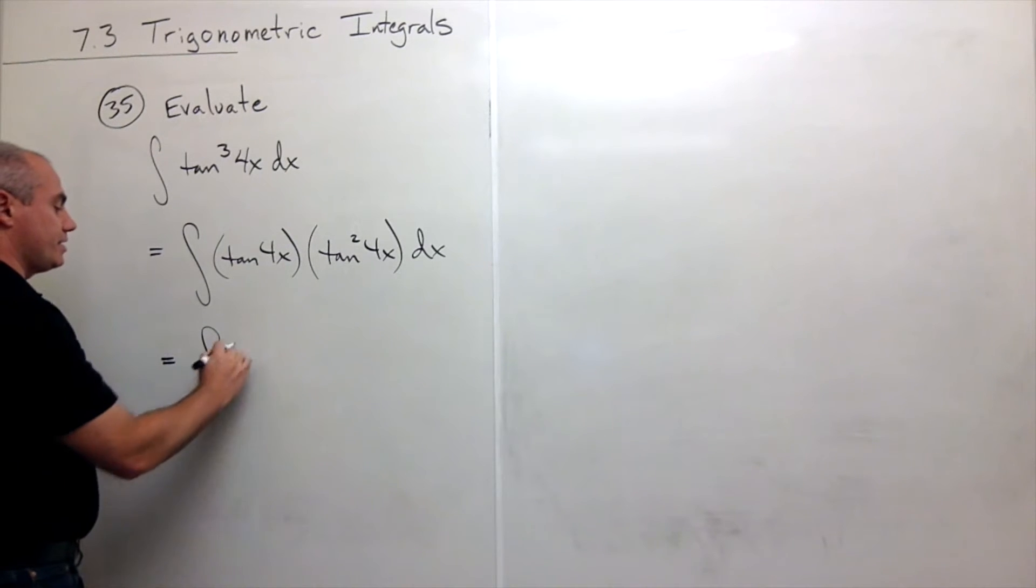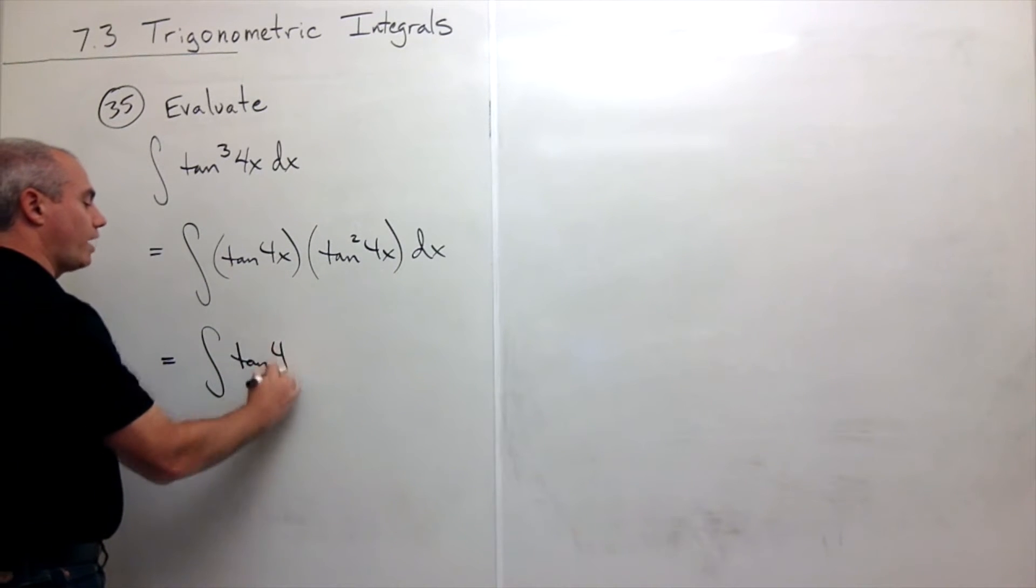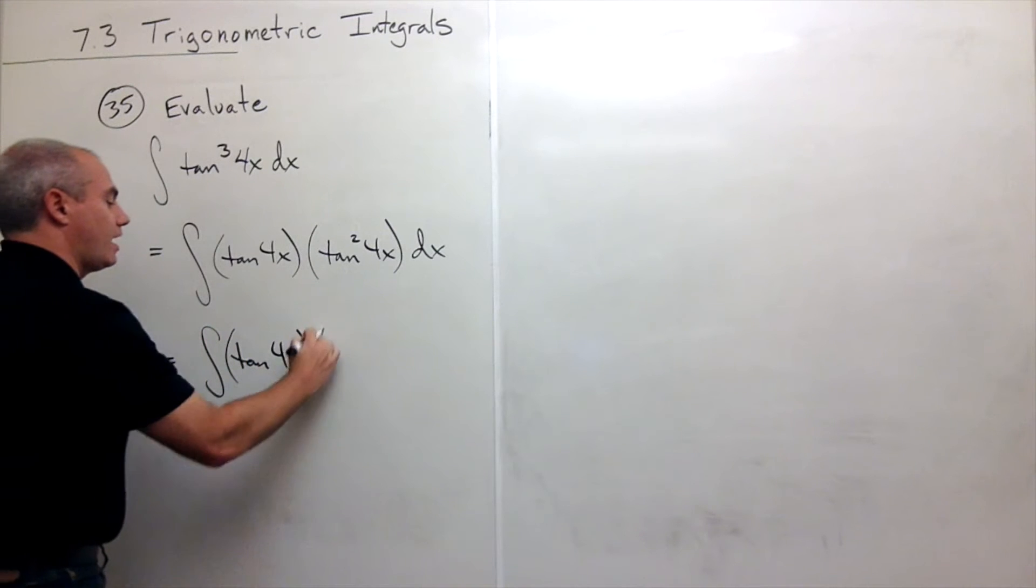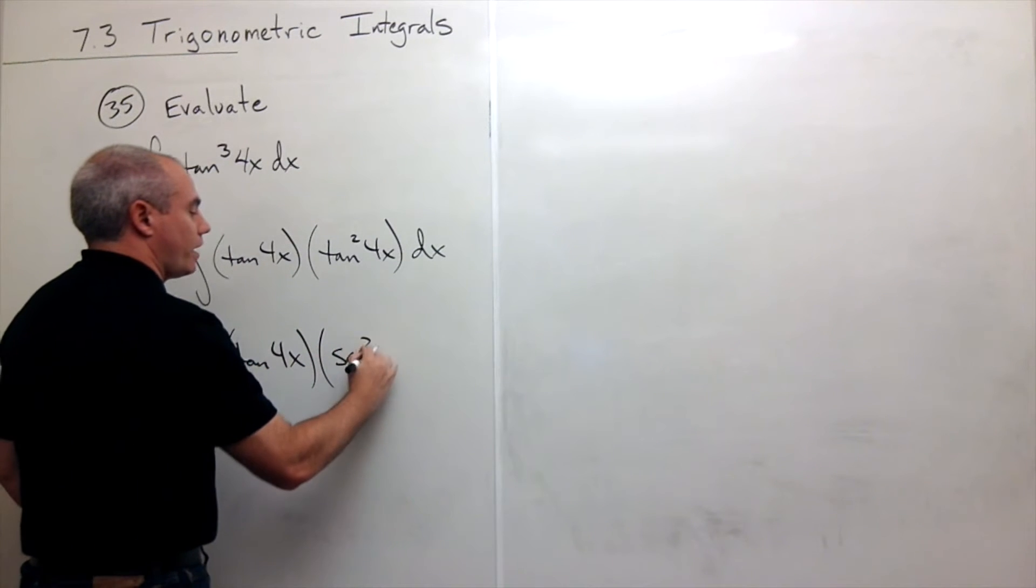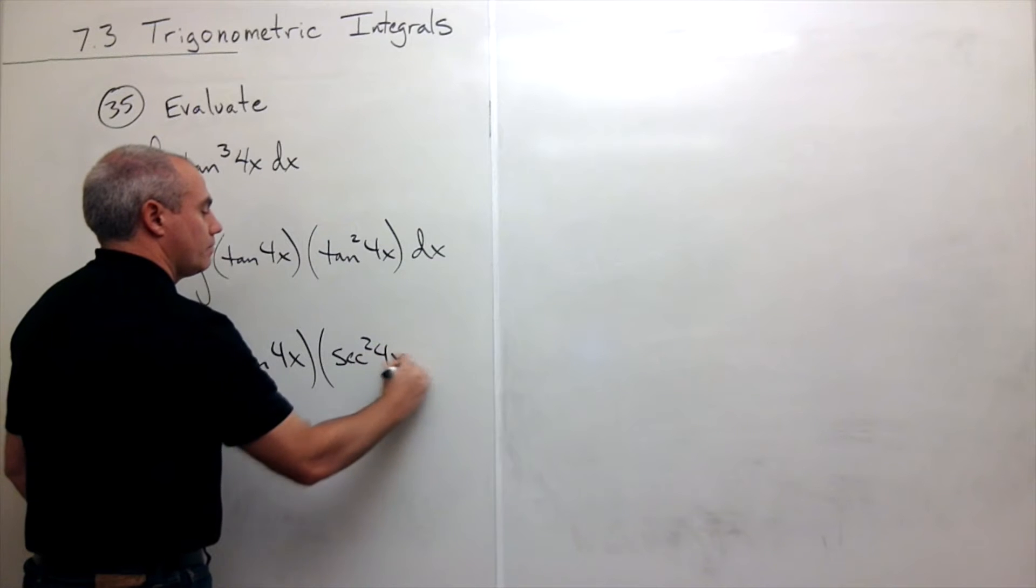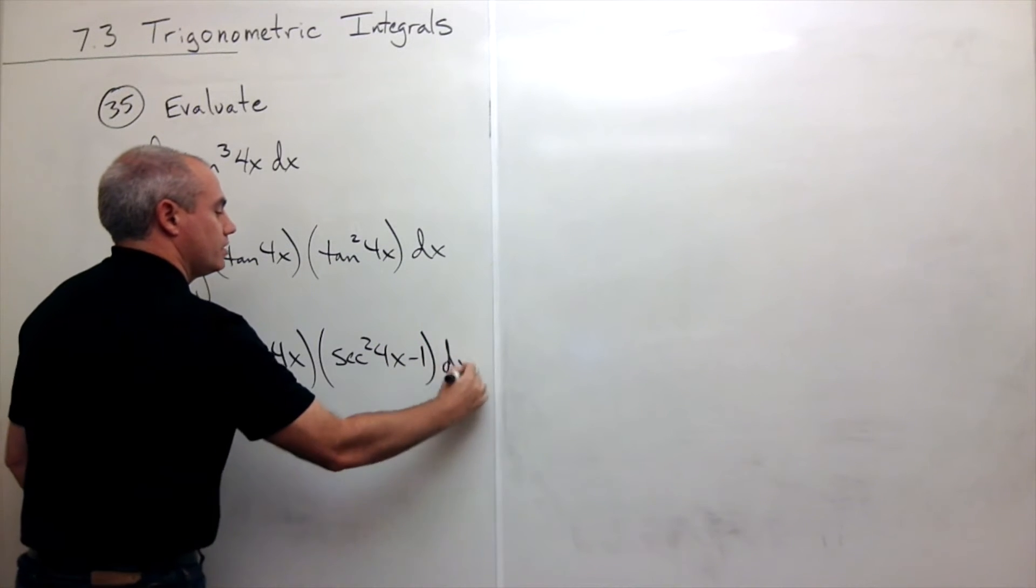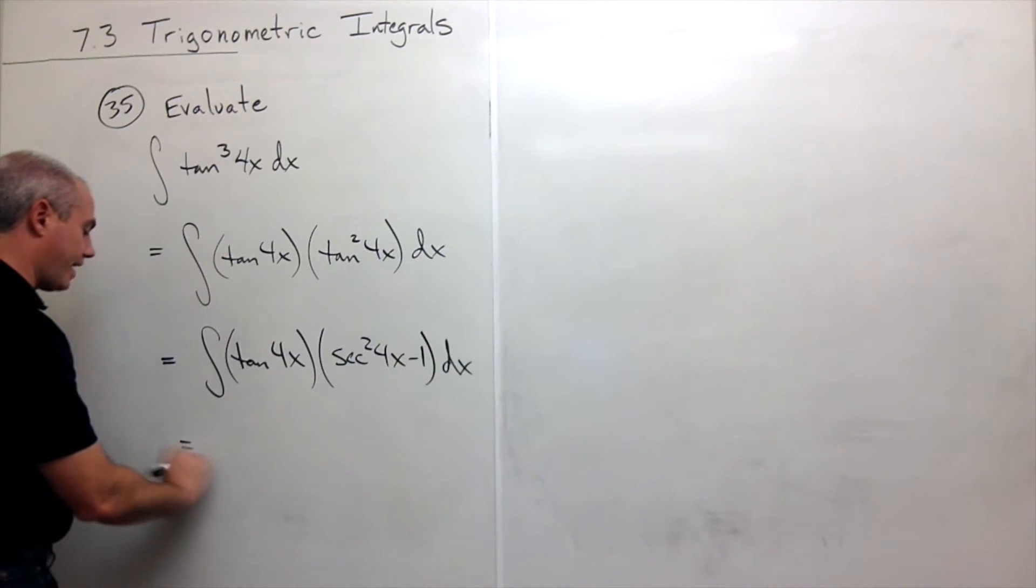So I'll rewrite this as tangent of 4x times, this is secant squared of 4x minus 1 dx. If I multiply that out,